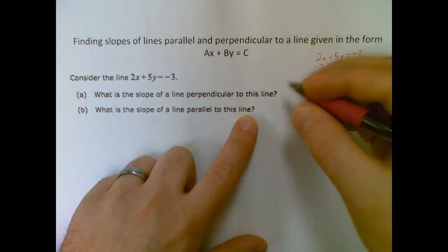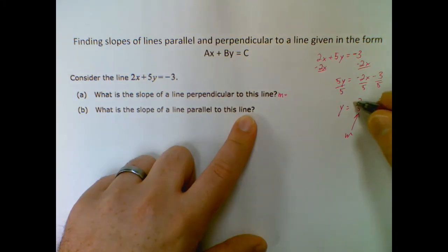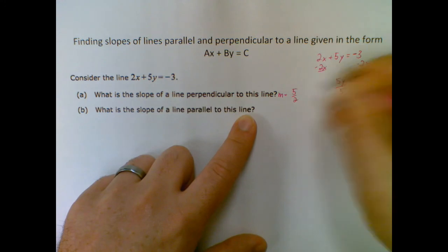So the slope perpendicular, which is the first this time, is the opposite reciprocal. So right now this one's negative, so I want it to be positive and flipped. So it'll just be 5/2.